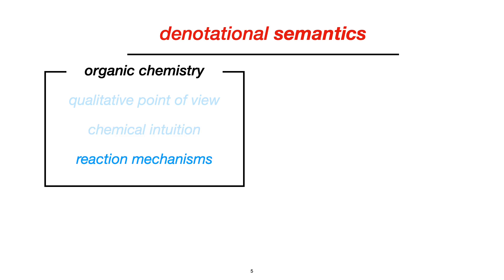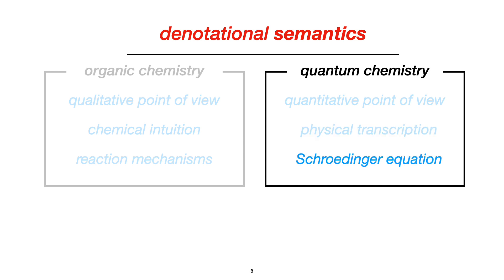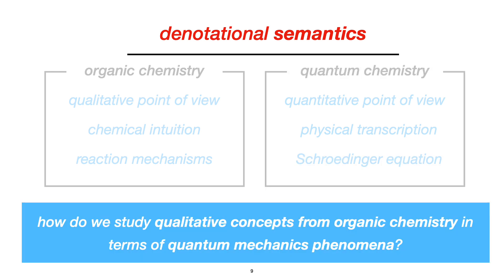On the other hand, we have quantum chemists with a quantitative point of view, using mathematics and physical transcriptions to understand and study chemical structures. We use the Schrödinger equation as our oracle to extract information and knowledge. With this in mind, you might ask how do we study qualitative concepts from organic chemistry in terms of quantum mechanics phenomena.